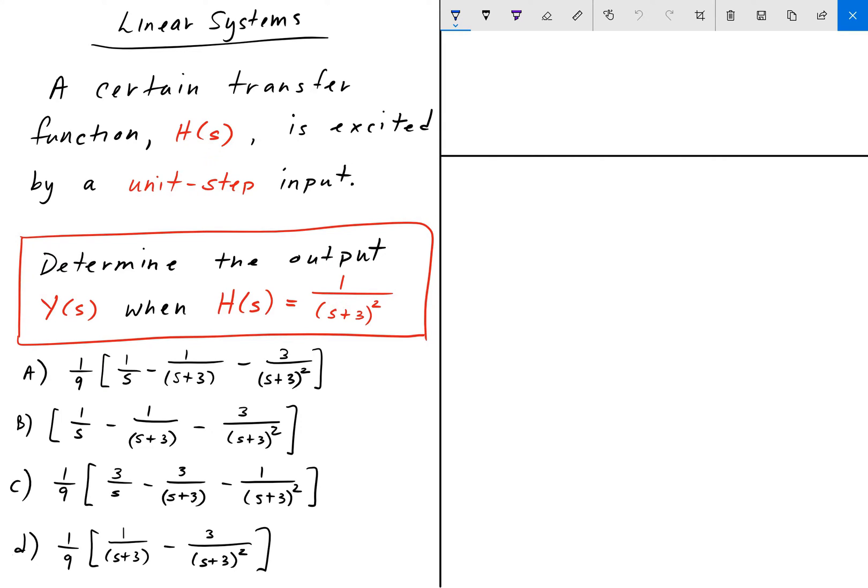Hey, everyone. Welcome back to Engineering Education. For this next problem, we have another linear systems problem. And here we're given a transfer function H(s), and we're told that it's excited by a unit step function. And we're asked to determine Y(s), so in the Laplace domain, when H(s) is 1 over (s+3)². And this is a multiple choice question. We have one of four different possibilities here, and it's going to be one of these four.